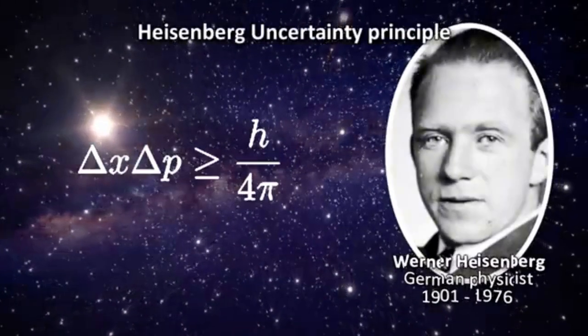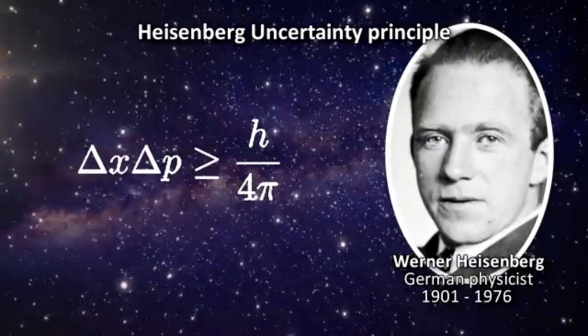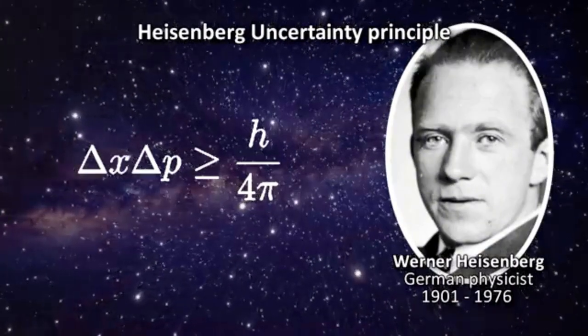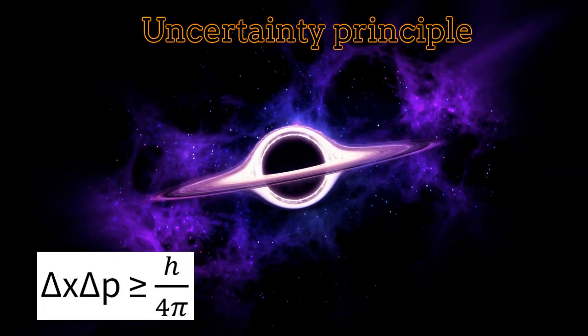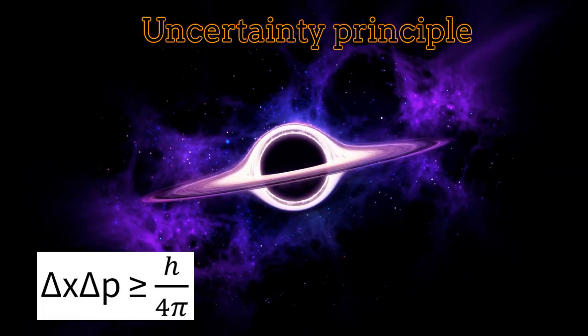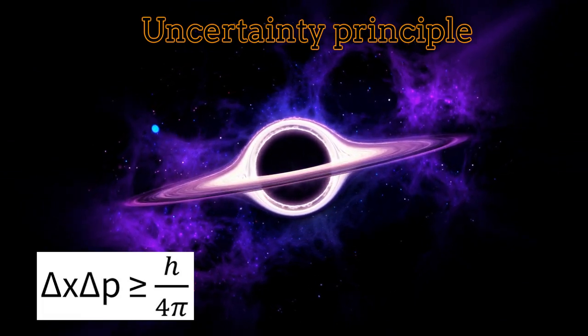One of the fundamental principles of quantum mechanics is the Heisenberg uncertainty principle. In its original version, it suggests that it is impossible to measure simultaneously the position and the momentum of a particle.